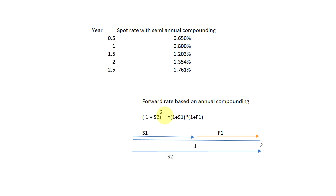So: (1 + s2)² equals (1 + s1) multiplied by (1 + f1), where f1 is the one-year forward rate that starts in one year's time. Based on this formula, if we rearrange it to isolate f1, we can easily calculate that one-year forward rate.